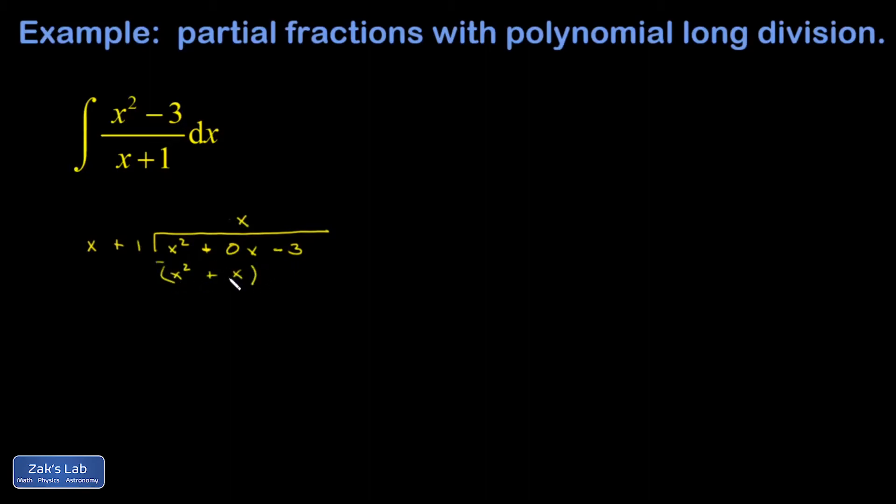I subtract that from the original polynomial and it ended with 0x minus x here. The x squared term is canceled out by design. That's the one I was trying to match perfectly.